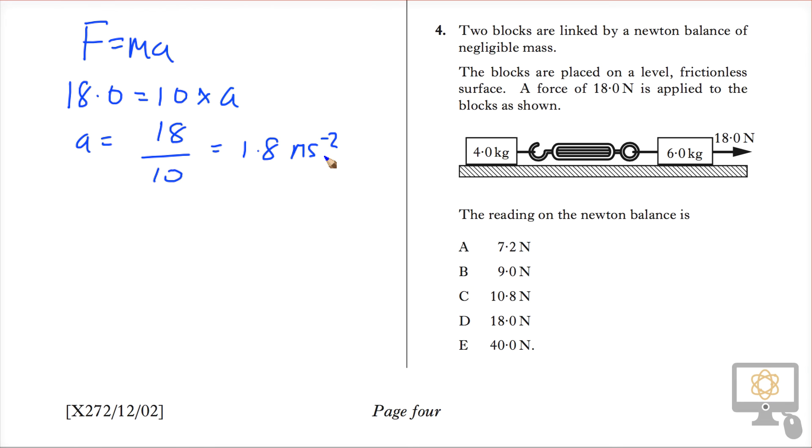So now we consider that this mass here will be accelerating at 1.8 meters per second squared. We can determine the force required to do that, or the unbalanced force required to do that. So that's the force on the 4 kilogram mass. That's equal to its mass, which is 4, times its acceleration, which is 1.8. And that gives us a value of 7.2 newtons.